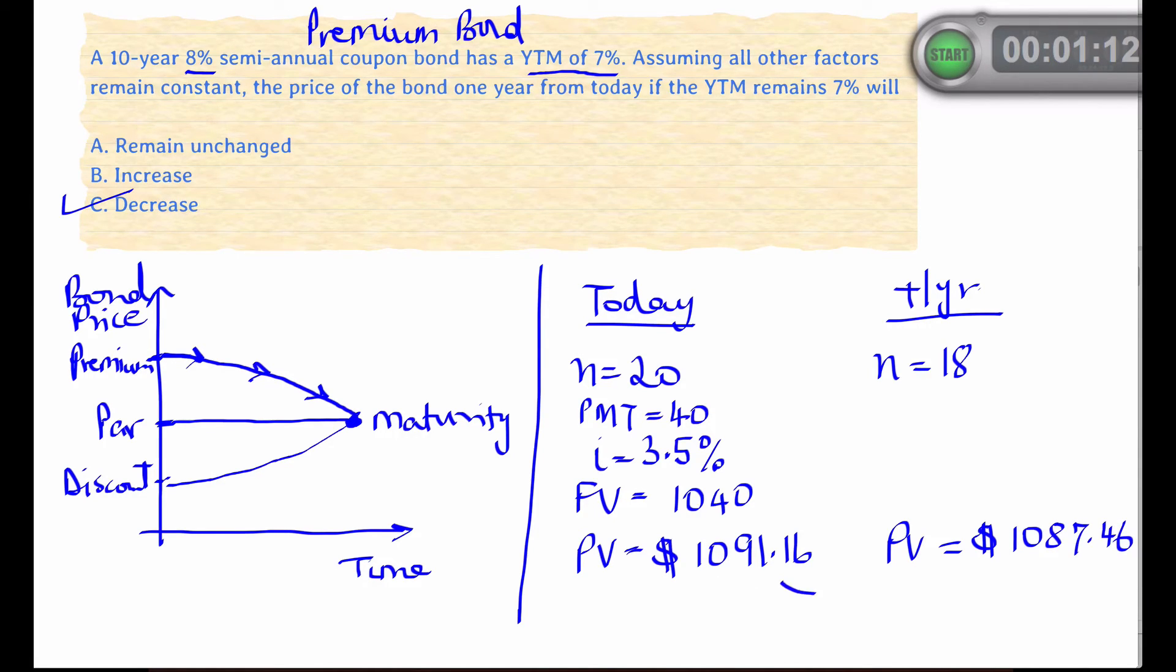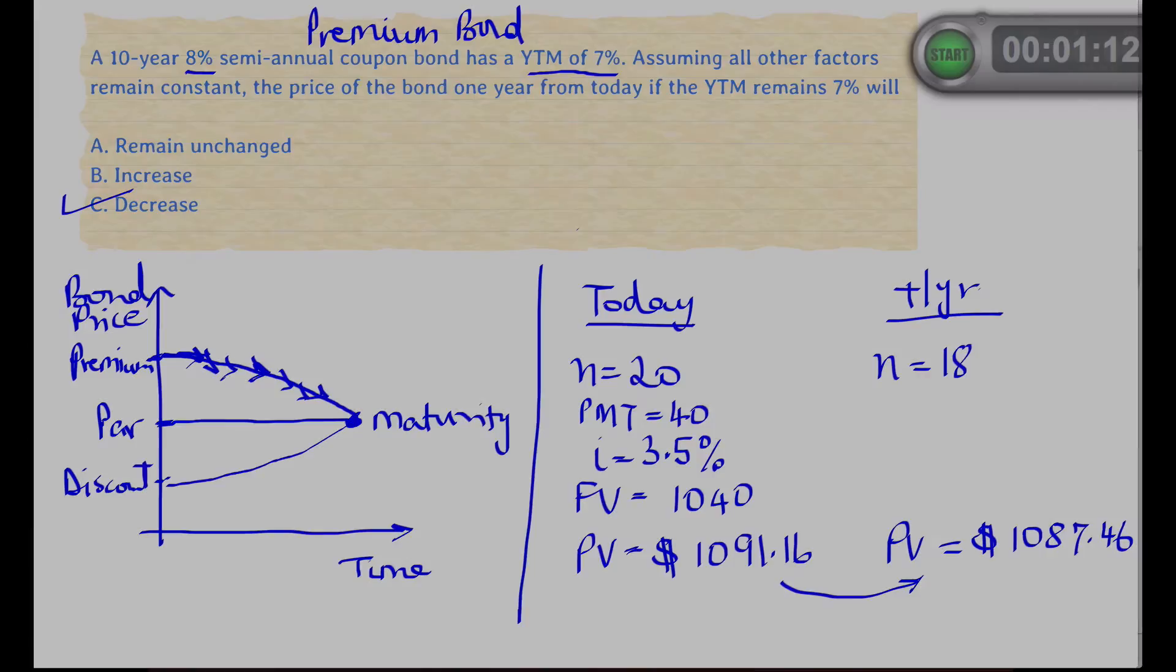The insight that we had here is knowing that if a bond's coupon rate is greater than its yield to maturity, then the price will be at a premium to par. Now if the coupon rate is less than its yield to maturity, it will be at a discount to par. I hope that helped clarify bond valuation. I wish you all the best in your preparation, and I will be back soon with more videos.